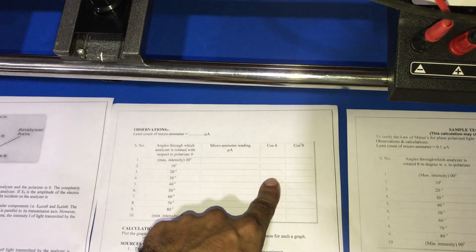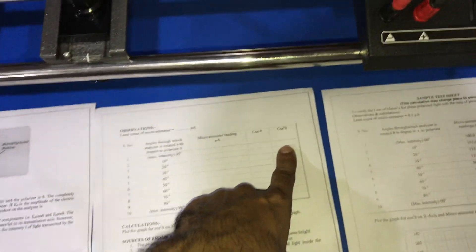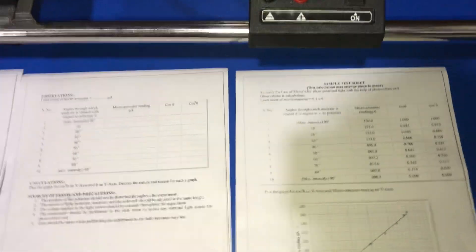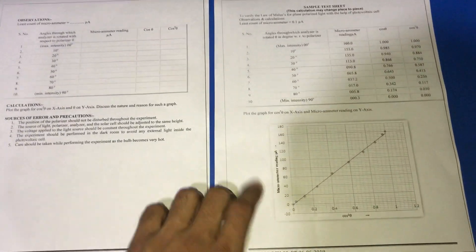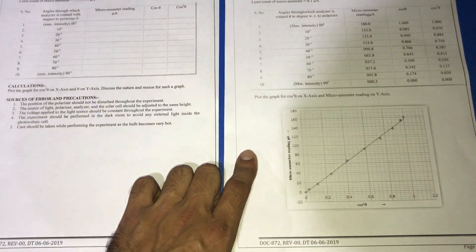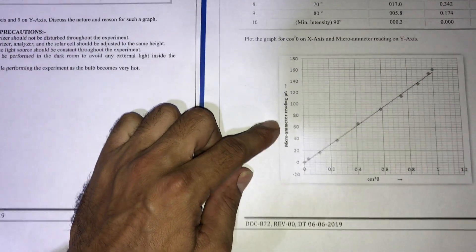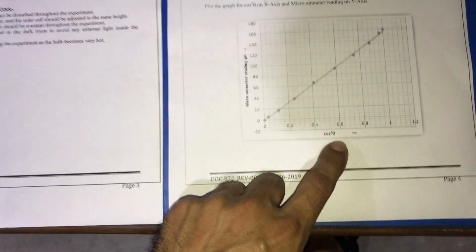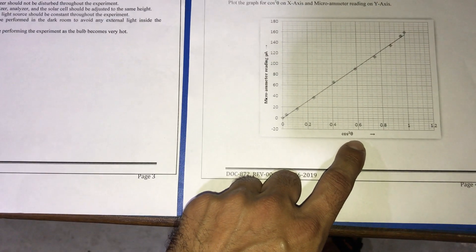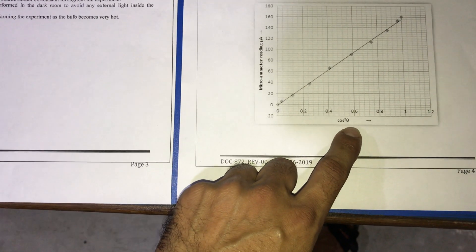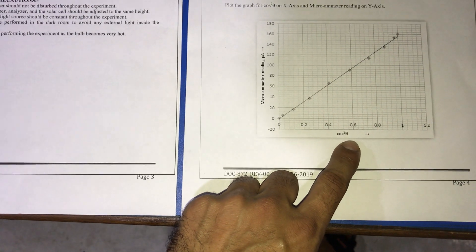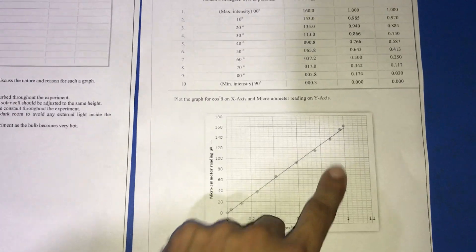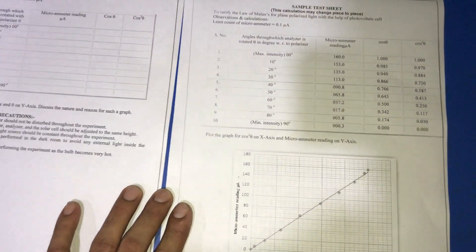Then we calculate the value of cos theta. After that, we calculate the value of cos square theta and draw a graph between microammeter reading along the y-axis and cos square theta along the x-axis. We obtain a straight line which verifies Malus's law.